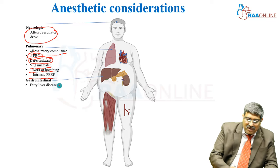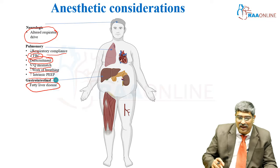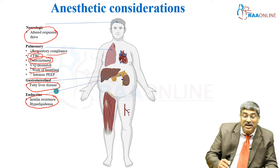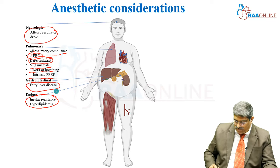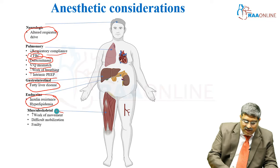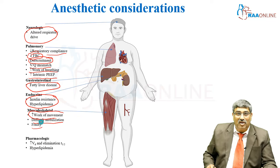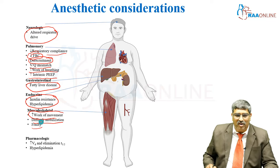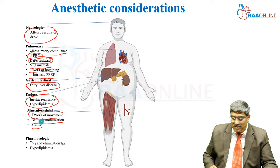Coming to the gastrointestinal system, there is fatty liver and even cirrhosis can happen. On the endocrine side, there is insulin resistance, hyperglycemia, and hyperlipidemia. Musculoskeletal considerations include increased work of movement, difficult mobilization, and frailty. Pharmacologically, there is increased volume of distribution and increased elimination half-life, and hyperlipidemia is present.